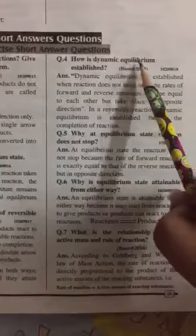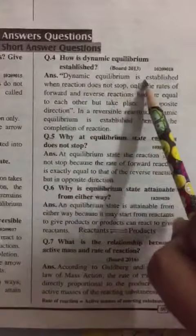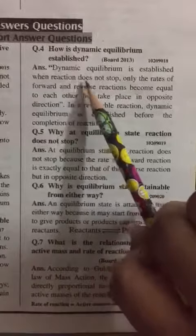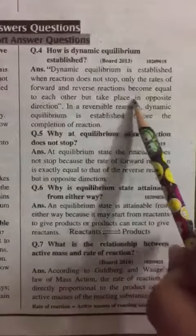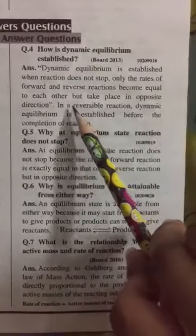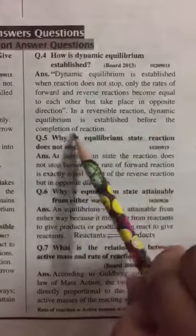Question No. 4 How is dynamic equilibrium established? Dynamic equilibrium is established when reaction does not stop. Only the rate of forward and reverse reaction become equal to each other but take place in opposite direction. In the reverse reaction, dynamic equilibrium is established before the completion of reaction.